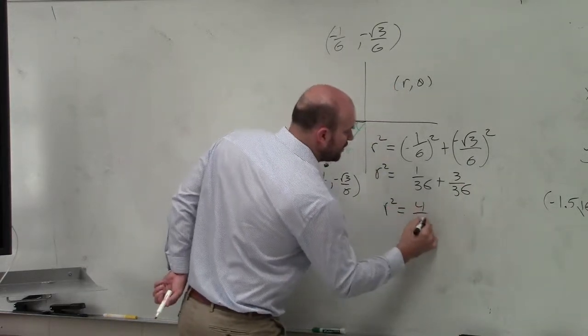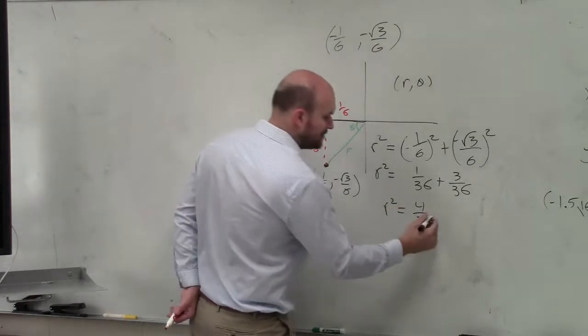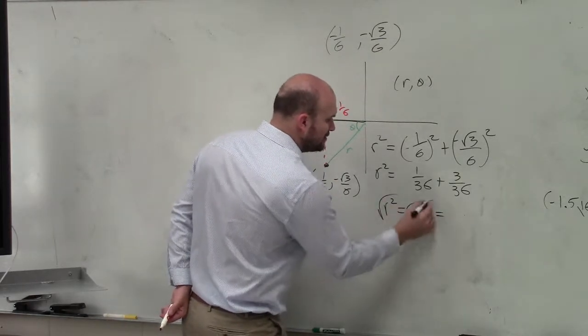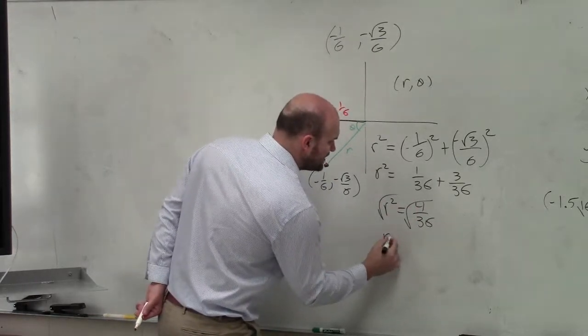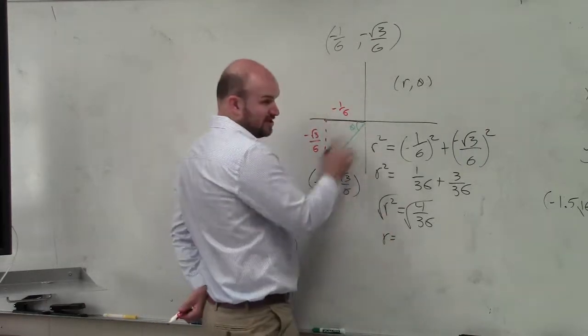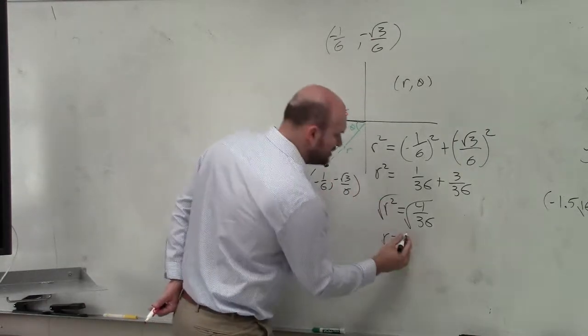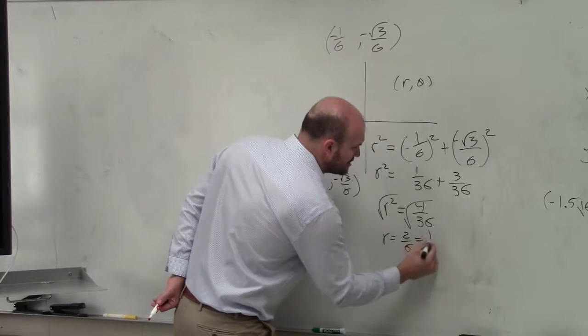Positive 3 over 36, r squared equals 4 over 36, which is equal to square root, square root. r is equal to plus or minus, but r is always going to be positive, so that's going to be 2 sixths, which is equal to 1 third.